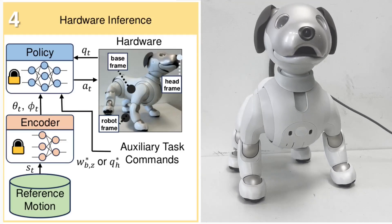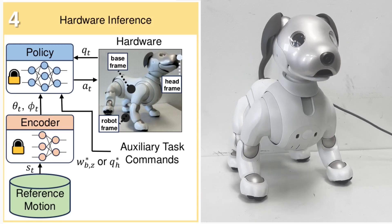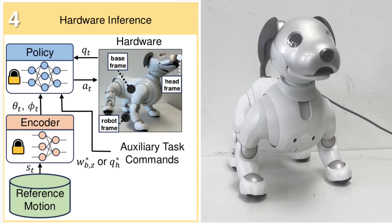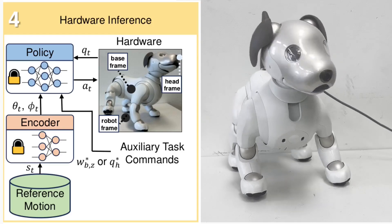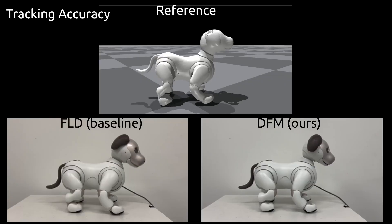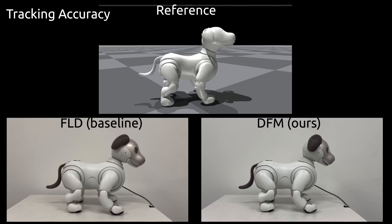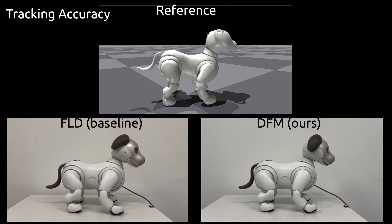Finally, during inference, DFM deploys the learned policy on the actual hardware, allowing for real-time execution and transition of dance motions. The tracking accuracy of DFM is demonstrated by conditioning the reference dance to a rear-leg lifting motion.